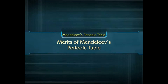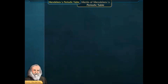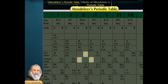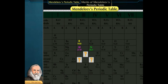One of the merits of Mendeleev's Periodic Table was that he left some blank spaces. These vacant spaces were left for including elements that were not discovered at that time. Mendeleev could also predict the properties of these unknown elements on the basis of the properties of the elements lying adjacent to these vacant spaces.